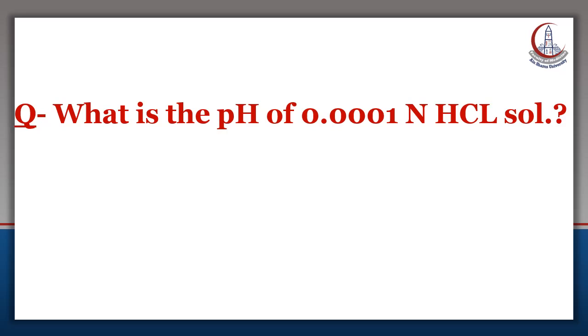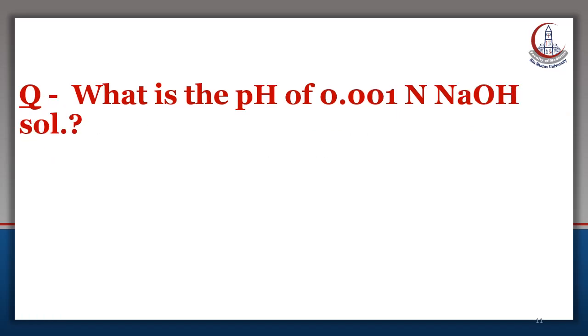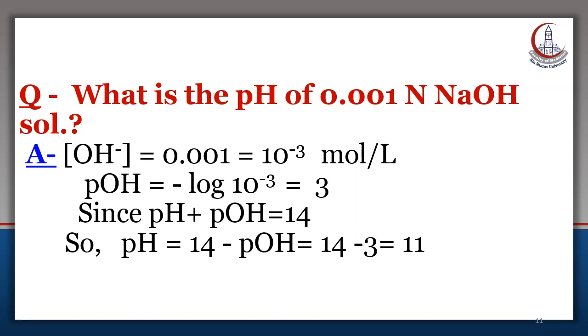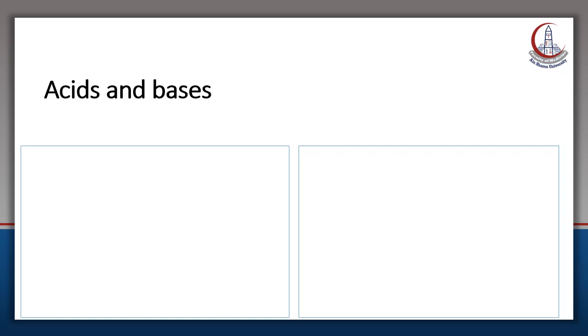Here is an example. What is the pH of 0.0001 normal HCl? Another one: what is the pH of 0.001 normal NaOH? For NaOH, we calculate pOH because we know pOH equals negative log OH-. OH- equals 10^-3, so pOH equals negative log 10^-3 equals 3. Since pH plus pOH equals 14, pH equals 14 minus 3 equals 11.